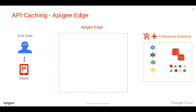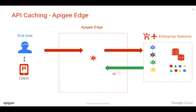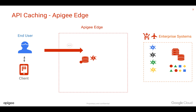You can have Apigee Edge sitting in between the client and the target system, where you can do API management and API caching. When a request comes to Apigee Edge, you can do all the traffic management and API management. The response goes again through the Apigee management platform, where you can cache the data and populate the cache in Apigee Edge. So whenever the request comes back a second time, Apigee can find this cache and return the data within a few milliseconds, increasing the speed of the API. That's how API caching basics work in Apigee Edge, but Apigee can do much more than simple API caching.